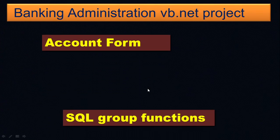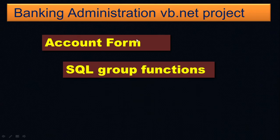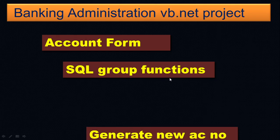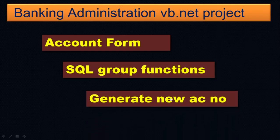One is to create the new form. We already know how to create a form, but here we have to use one more control — the drop-down list box — and how to populate it with the account type. Let us discuss about the SQL group functions and generate the new account number using the group function.